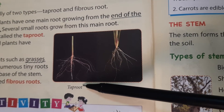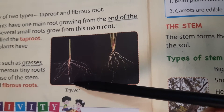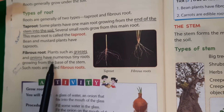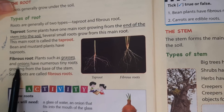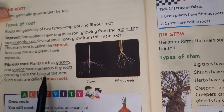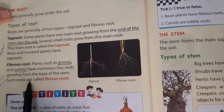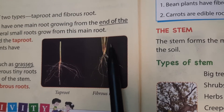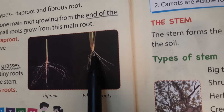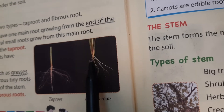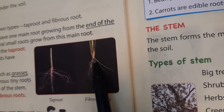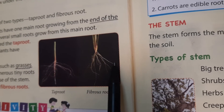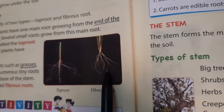Examples of tap roots are bean, mustard, kidney beans, and so on. Now the second type of root is the fibrous root. Plants such as grasses and onion have numerous tiny roots growing from the base of the stem — such roots are called fibrous roots. Here is an image of fibrous roots. The stem grows above the soil, but from this stem, many small roots grow out in all directions. This type of root is called fibrous roots.